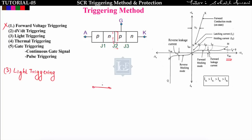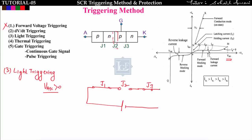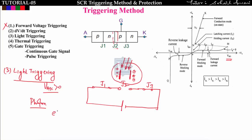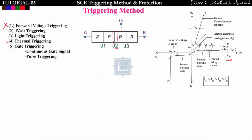The third method is light triggering. In forward blocking mode, the whole voltage drops across junction J2 which has stored charge across it. By shining light on junction J2, photons strike the junction and generate electron-hole pairs, which neutralize the stored charge across J2. The depletion width decreases and the SCR starts conducting. In this way we can trigger the SCR using light.